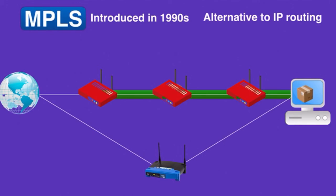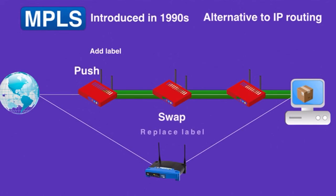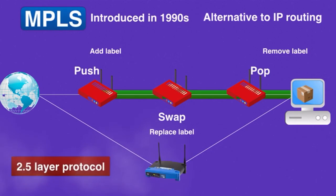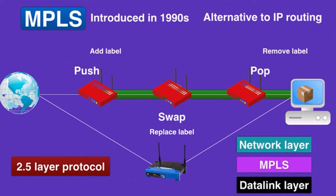When a router receives a packet, it does one or more of these functions: Push — adds a label, typically performed by the first router. Swap — replaces a label, usually performed by routers between the first and the last. Pop — removes a label, most often done by the last router. MPLS is also called a 2.5 layer protocol because it works below the network layer (Layer 3) and above the data link layer (Layer 2).